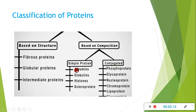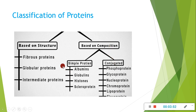Simple proteins include albumins — also called human serum albumins — globulins, histones (H1, H2, H3, H4, and H5), and scleroproteins. Conjugated proteins are in conjugated form and include phosphoproteins, glycoproteins, nucleoproteins, chromoproteins, lipoproteins, and many more types. This is a brief overview of the classification of proteins.